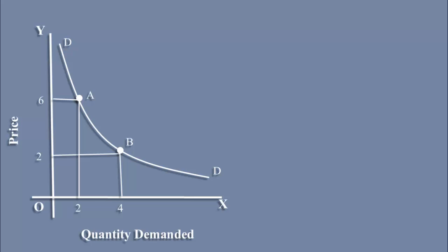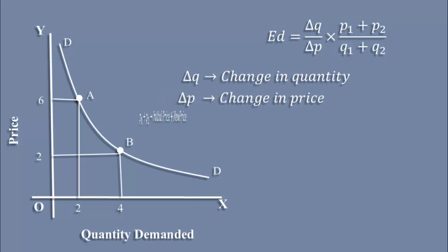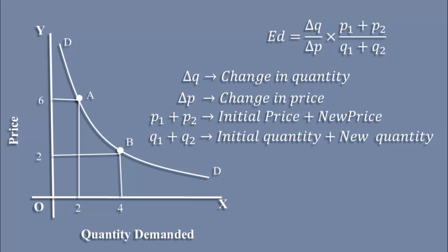The arc method formula goes like this. Where Delta Q is change in quantity, Delta P is change in price, P1 plus P2 is initial price plus new price, Q1 plus Q2 is initial quantity plus new quantity.